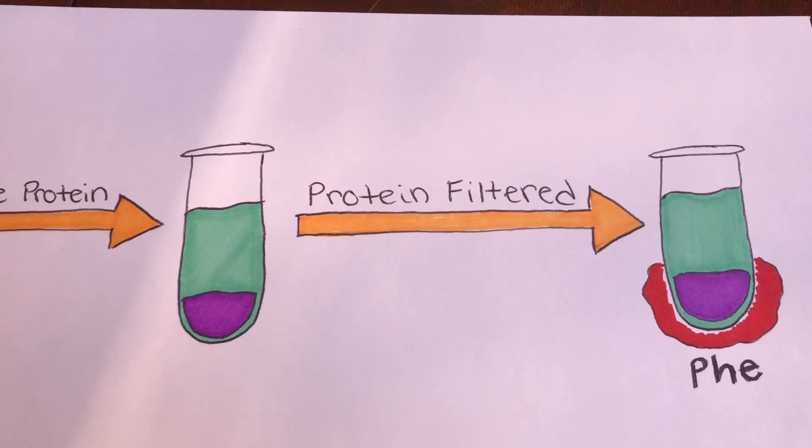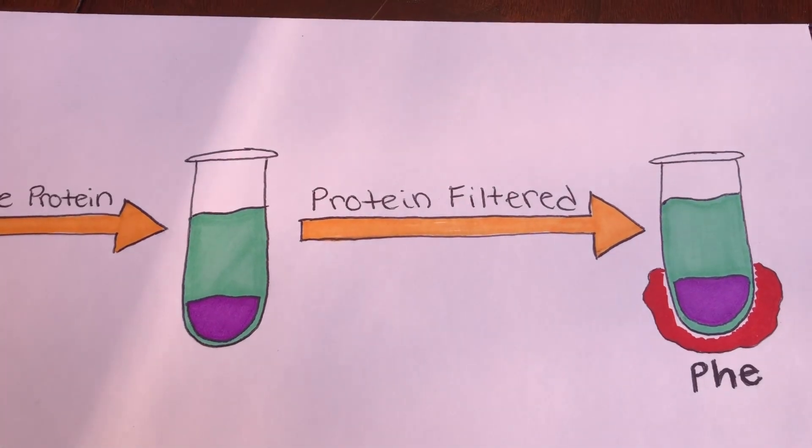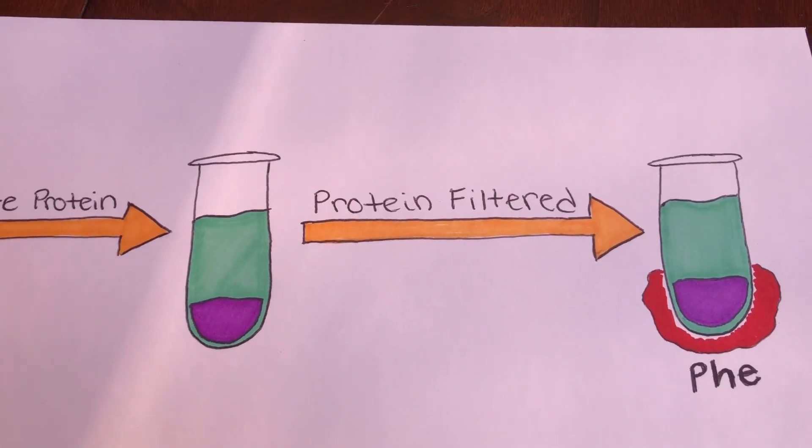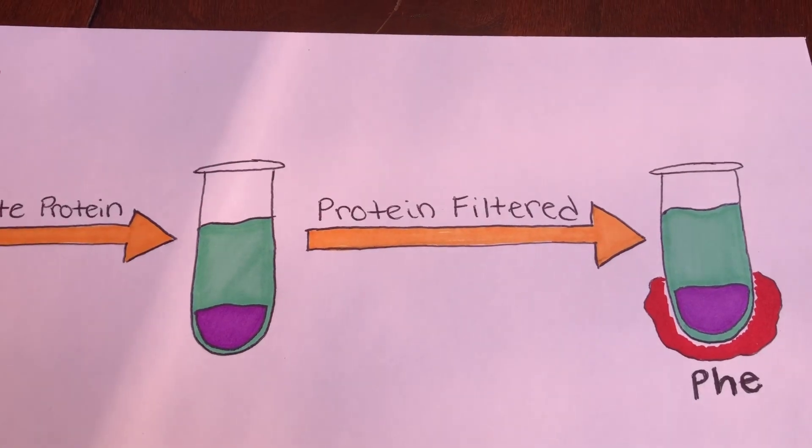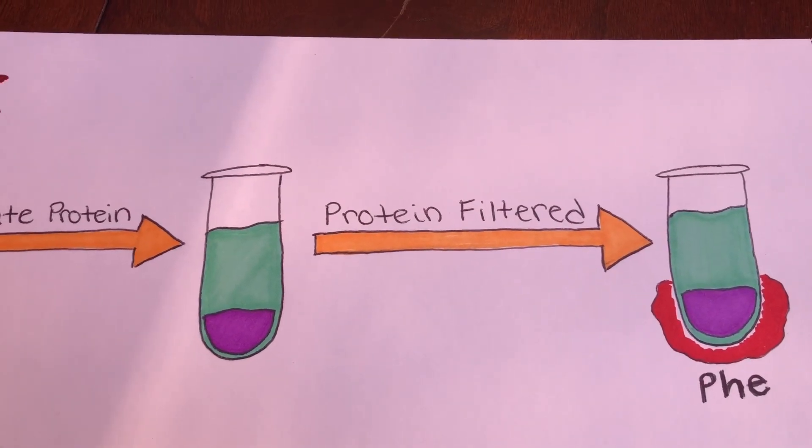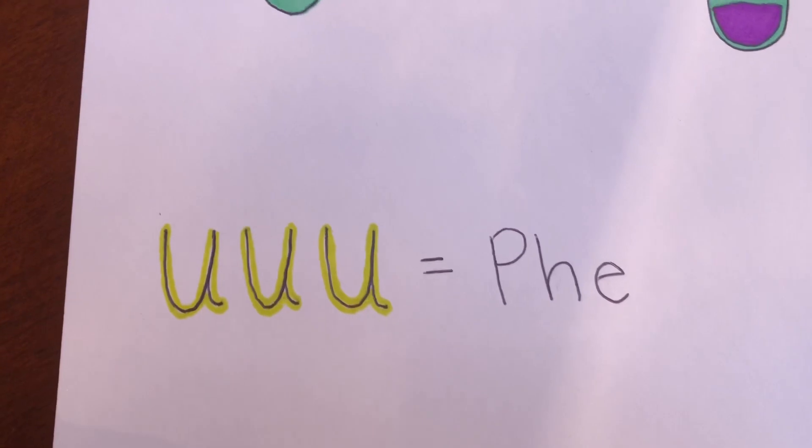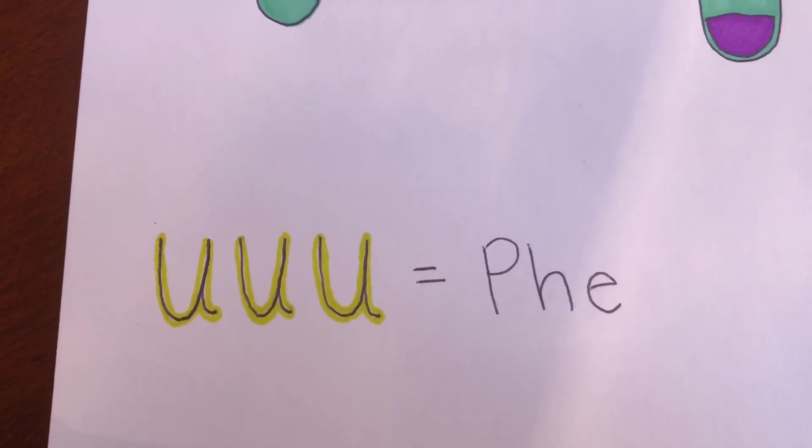This step was repeated for all 20 amino acids, each time having a different amino acid labeled. In this case, the test tube containing the labeled amino acid phenylalanine reacted on the filter, meaning that UUU codes for phenylalanine.